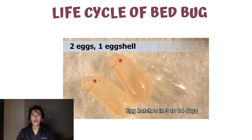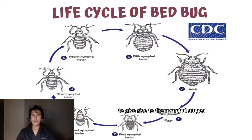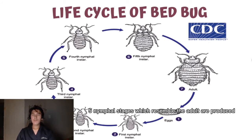The egg hatches in 3 to 14 days to give rise to the nymphal stages. There are 5 nymphal stages — 1, 2, 3, 4, 5 — which resemble the adult, are produced.